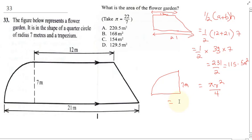So this means we're going to do 22 over 7 multiplied by the radius 7 times 7 all divided by 4. So 7 will cancel 7. This will give us 22 times 7 all over 4, which gives us 38.5 meters squared.